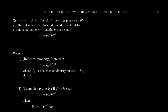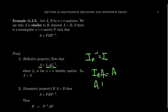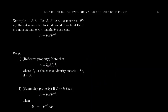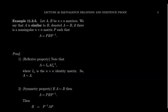For reflexivity, A = IAI⁻¹, where I is the identity matrix. The identity matrix is its own inverse, and multiplying by I returns A. Since the identity is non-singular, this shows A is similar to A. We get the reflexive property.